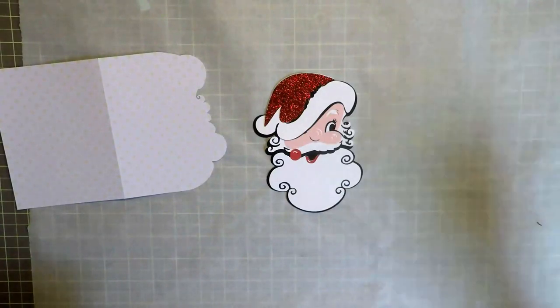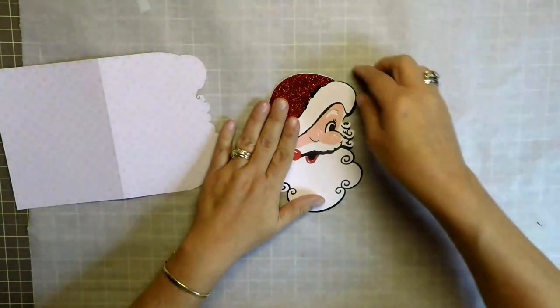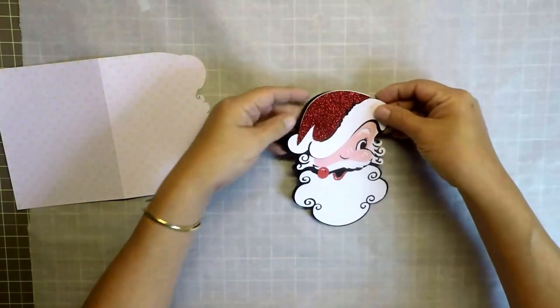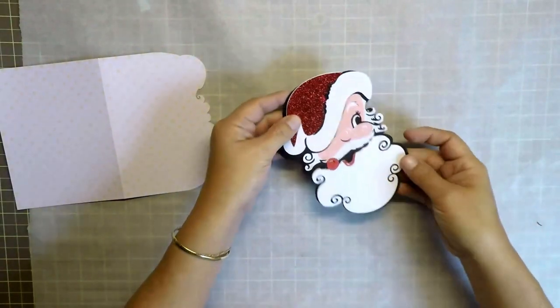This is what my Santa Claus is going to look like before I adhere it to the card. So now I'm really just going to take the pieces apart, now that I know where they go, and I'm going to adhere them together.